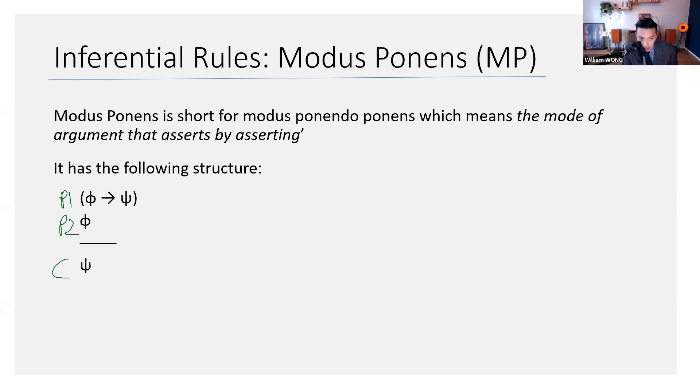If it is raining, then the sidewalk is wet. Then we look outside, we see it's raining, then we say, oh well, the sidewalk must be wet. Okay, that's the first inferential rule, modus ponens.